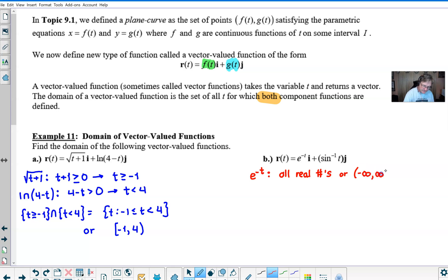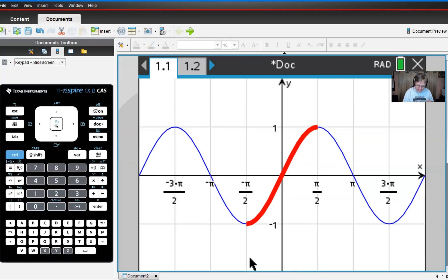So there's not a lot of restrictions on e to the negative t. Now, sine inverse - different story. And this is a little tricky for students. A lot of times students forget what the innate domain restrictions are for the inverse sine. And maybe this might help you a little bit graphically if you're having trouble with this.